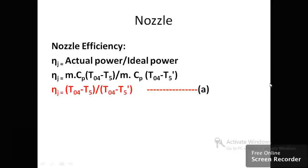The final component is the nozzle. Like the turbine, the nozzle efficiency is the ratio of actual power to ideal power: η_nozzle = (T₀₄ − T₅) / (T₀₄ − T₅′), where T₀₄ is the nozzle inlet stagnation temperature, T₅ is the actual exit static temperature, and T₅′ is the ideal exit static temperature.